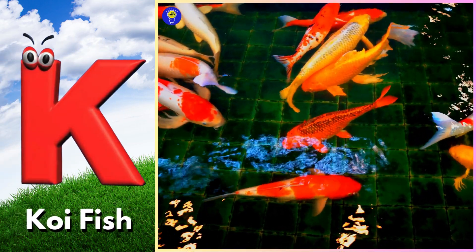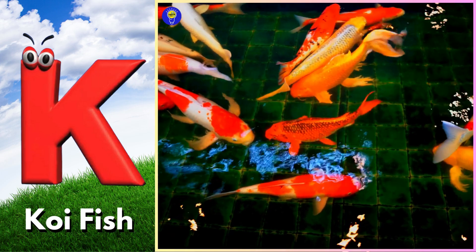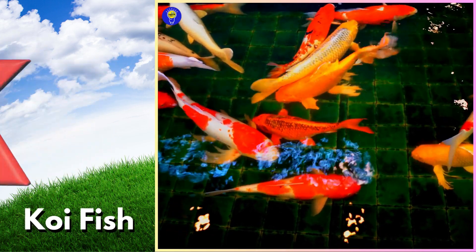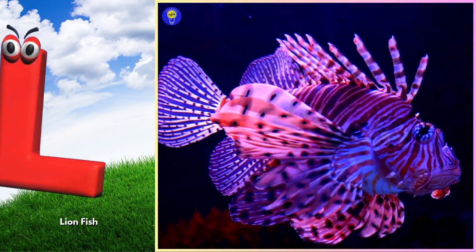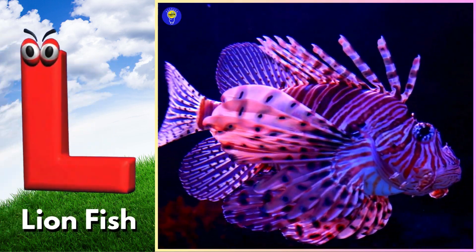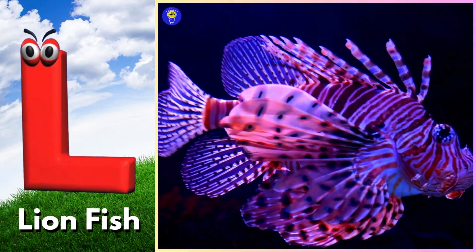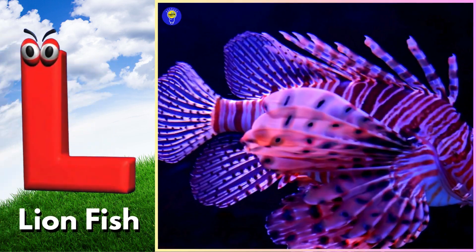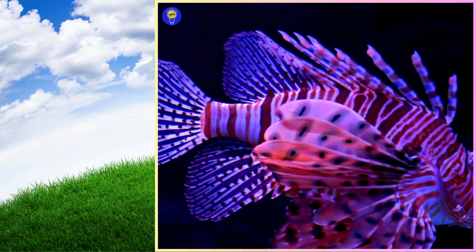K is for koi fish. Kuh, kuh, koi fish. L is for lionfish. Luh, luh, lionfish.